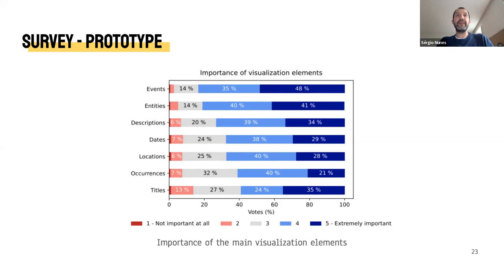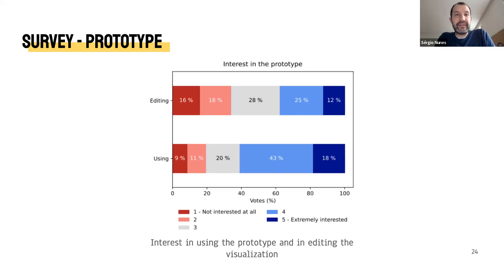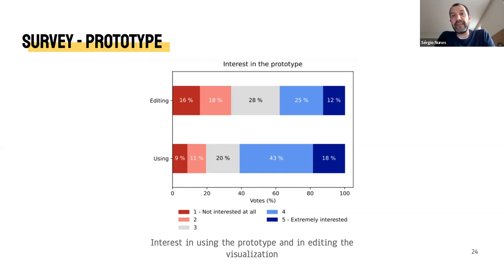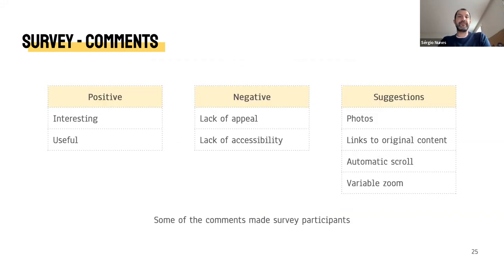Moving on to the prototype section. The most valued elements were the events and the entities — in line with our expectations, since they were the central elements of the visualization. Then we have the descriptions, dates, locations, occurrences (the participation of entities in a particular event), and finally the titles. These results are consistent across different age groups. Approximately 61% of respondents provided a rating of four or higher when asked how interested they would be in using the visualization. Interest in editing the view received only 37% of responses with the same classifications, which was expected as that feature fits more the profile of power users rather than the general public.